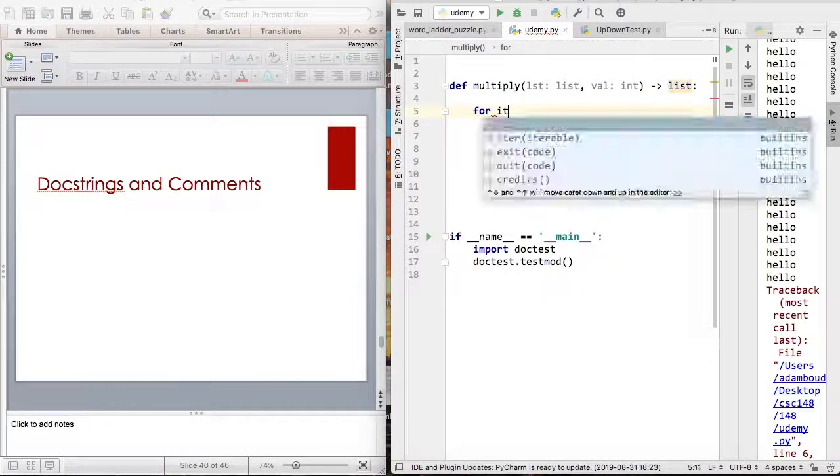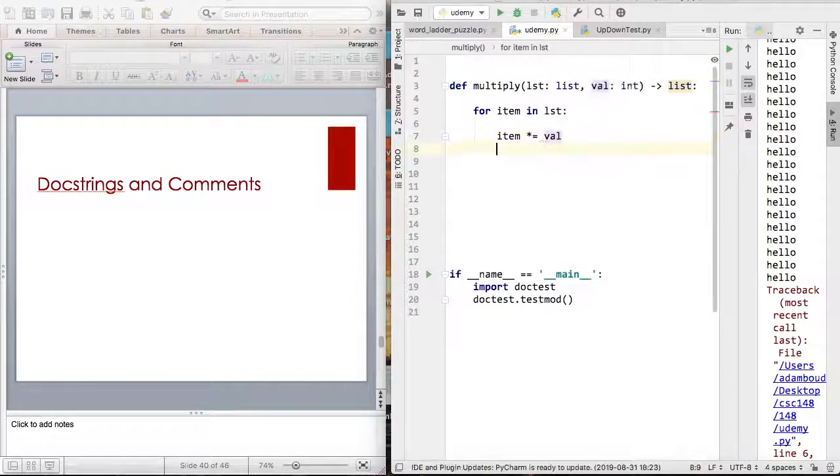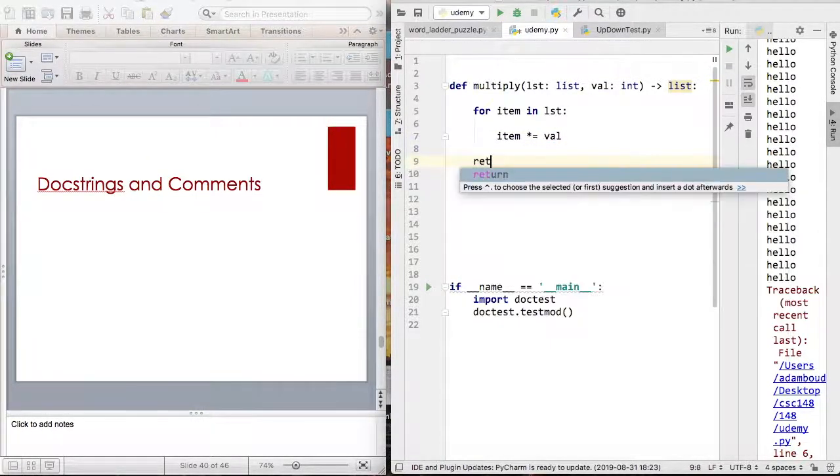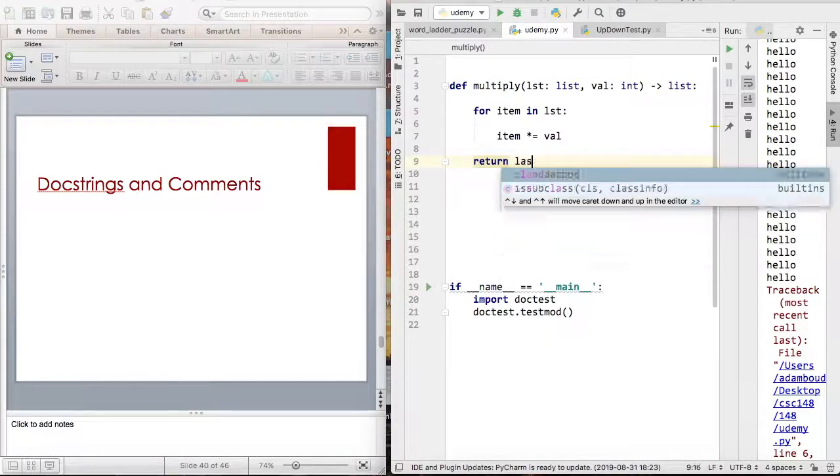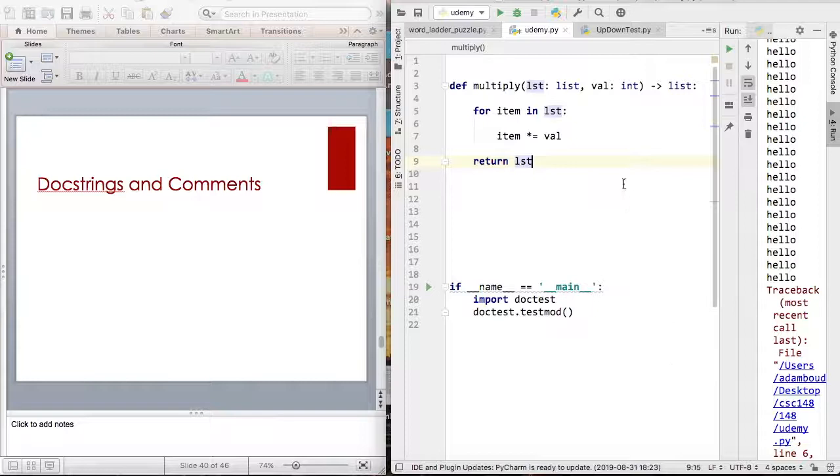I forgot the colon because you want to start a new block of code. So you can say for item in list, item multiplied equal to val. And then you basically want to return back a list. So this is like a very simple definition of a function.